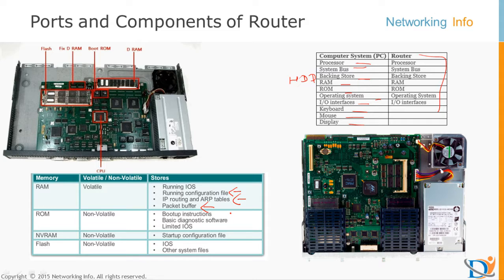ROM has a special type of program — in a Cisco router this is the bootstrap program, similar to the BIOS in a computer. This is a non-removable mini operating system stored in ROM. The bootstrap program tells the router where the operating system is located. We also call it the mini IOS or mini operating system of the router.